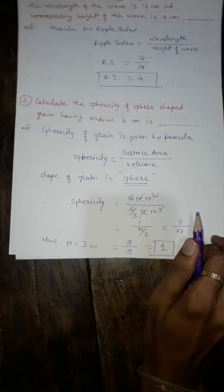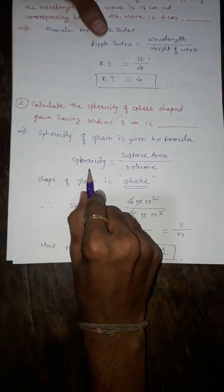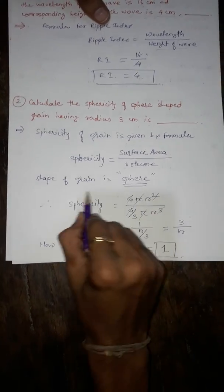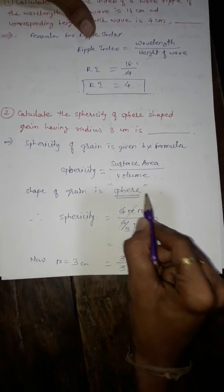Sphericity of the grain is given by the formula. The sphericity is the ratio of surface area divided by volume. The shape of the grain is sphere.